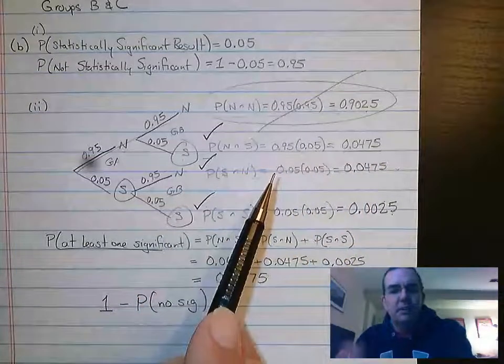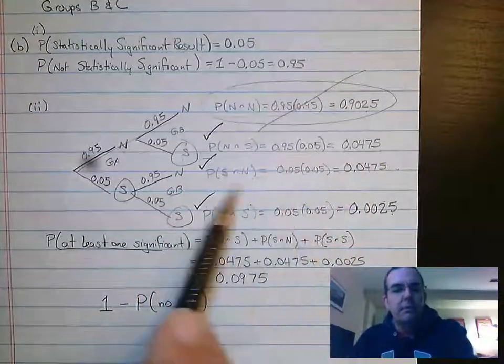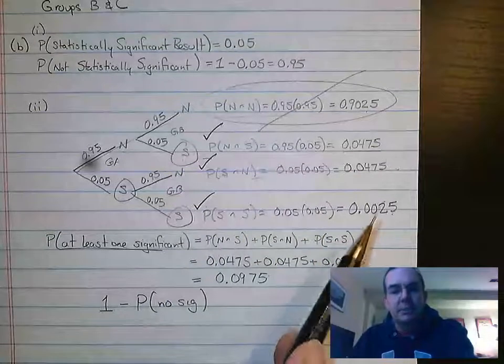Same thing holds here, but it's just reversed, 0.0475. And this last one is the probability of two significant tests. The reason I did this, I did the full tree diagram is because the tree diagram asks the following question.